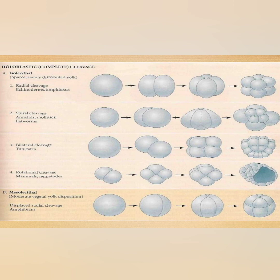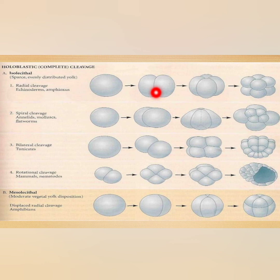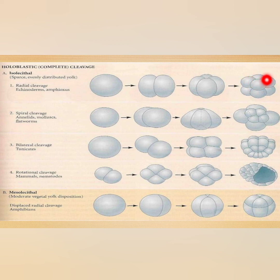In radial cleavage, successive cleavage planes cut straight through the egg at right angles to each other. The resultant blastomeres of the upper tier lie directly over the corresponding blastomeres of the lower tier when viewed from either pole, and blastomeres are arranged in a radially symmetrical form. This type of cleavage pattern is found in echinoderms and amphioxus.